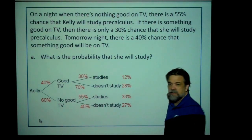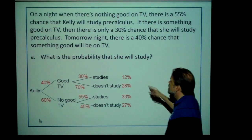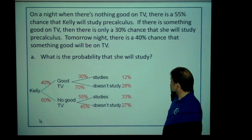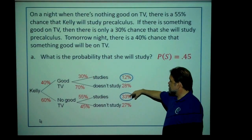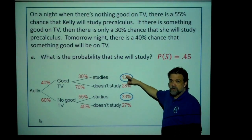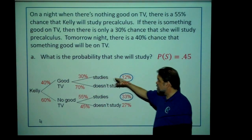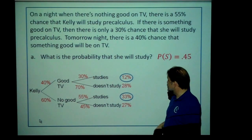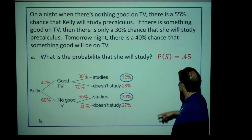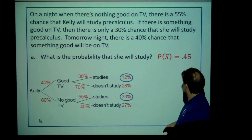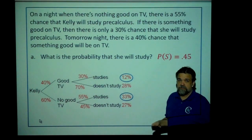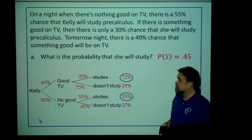We've got our tree all set up and now we're ready to start answering some questions. What's the probability she's going to study? It's going to be this plus this — the probability of her studying and there's something good on TV, plus the probability that she's studying and there's not anything good on TV. That comes out to 12 plus 33 is 45%. You can also display this in a table. Here's the event of good TV, the complement of good TV, the event that she studies, the complement of her studying. If you're given conditional probabilities, I prefer the tree.